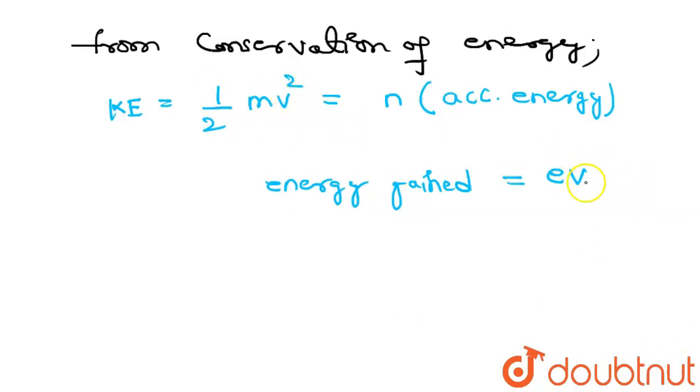According to the question, when we cross two bars, the acceleration energy is nothing but twice the energy gained, which is 2 times eV. This is our acceleration energy.